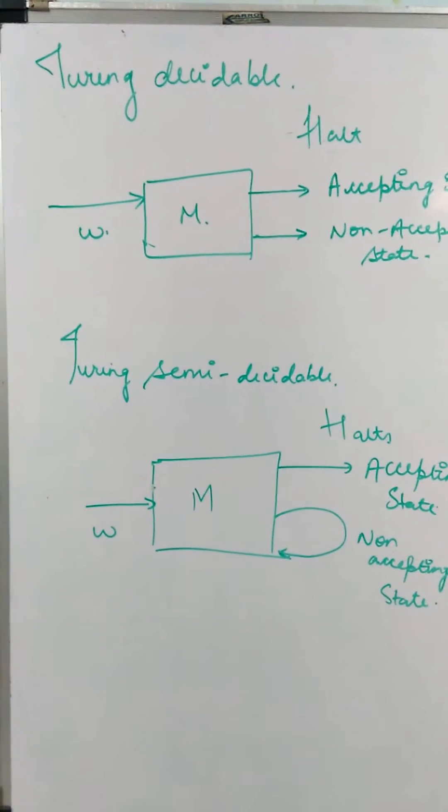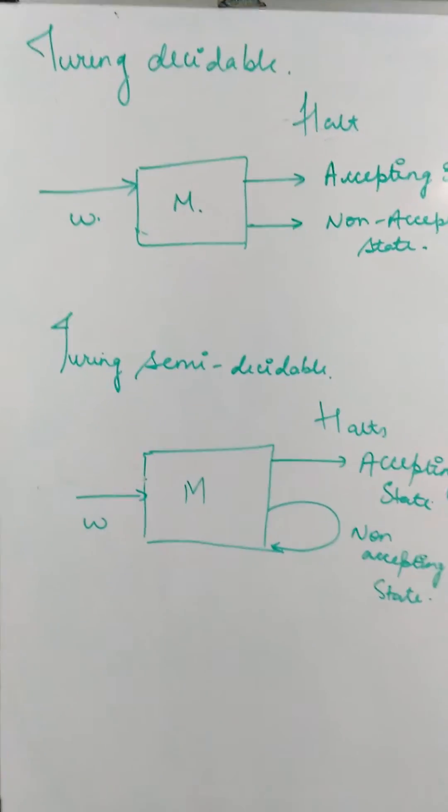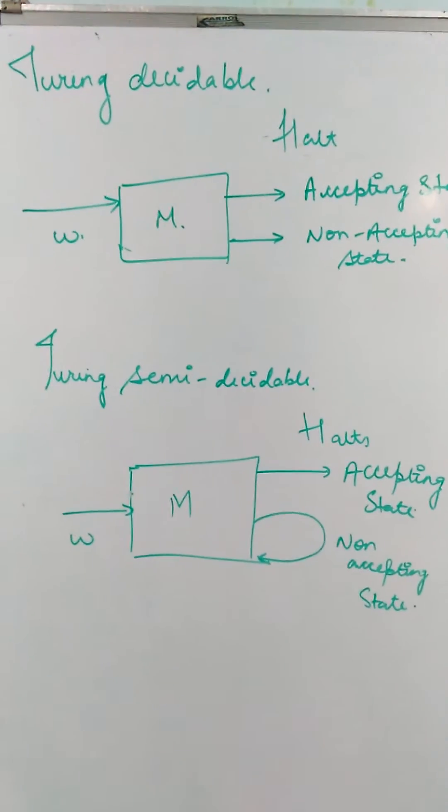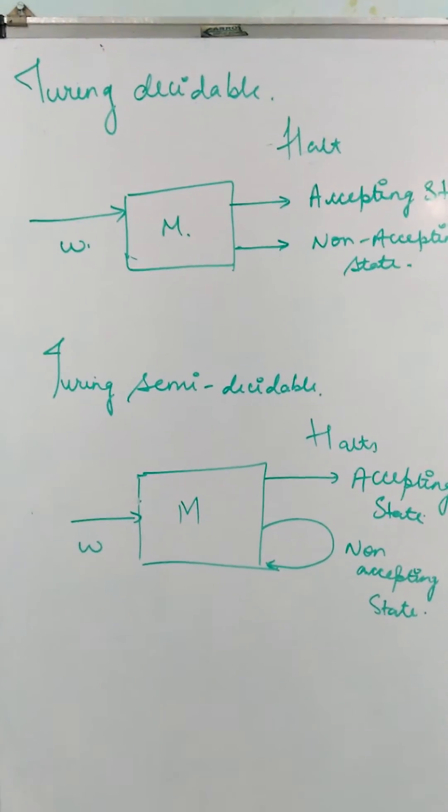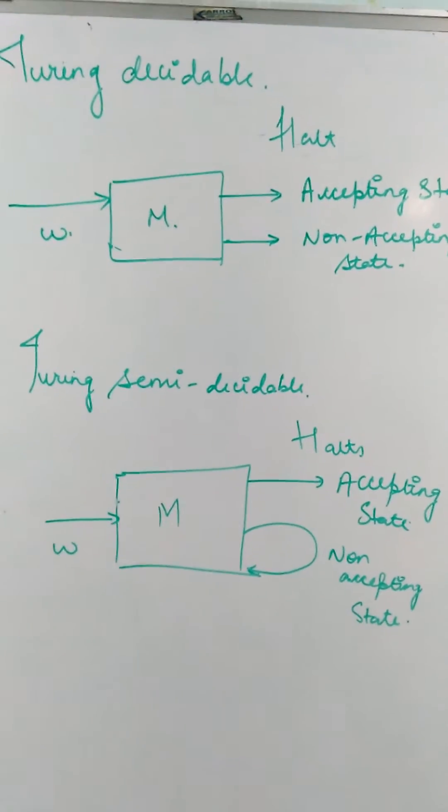Before that, we need to know what Turing Decidable and Turing Semi-Decidable languages are. So, a Turing machine decides a language if it always halts. If we give an input like w, then the machine will always halt.